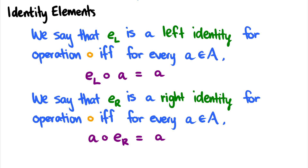We say that E_L is a left identity for some operation if every A in our set has that E_L with the operation on A is equal to A. So a left identity combined with another element will give you back that other element. With multiplication, if I take one times any number A, I get A back — and it is a left identity if this holds for the left side.